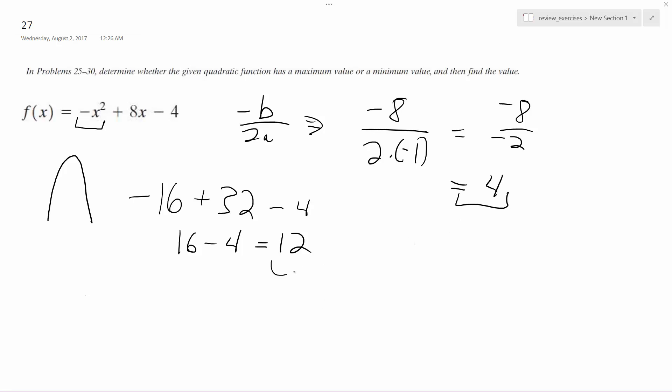Alright, so 4 and then 12. So the maximum is going to be 4 comma 12. The maximum is at y equals 12 when x equals 4. Or however you want to put that in there. Alright, sorry about that. That's it.